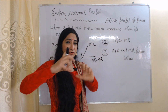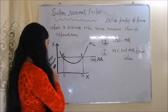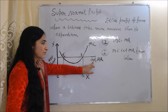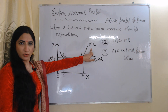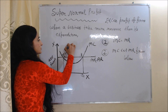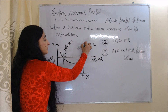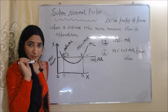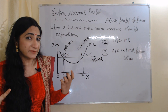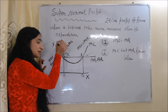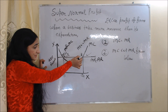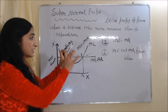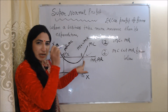The second condition is that MC must cut MR from below — the marginal cost curve cuts the marginal revenue curve from below. In this diagram, the x-axis shows output and the y-axis shows cost and revenue. The horizontal line represents MR and AR, and the curve represents MC. At point T, MC equals MR by cutting from above — so T is not a stable equilibrium. At point E, MC equals MR by cutting from below, so E is the stable equilibrium point where both conditions are satisfied.